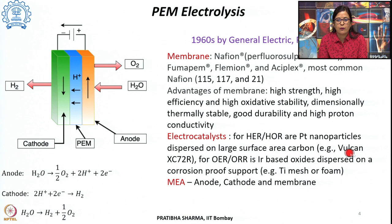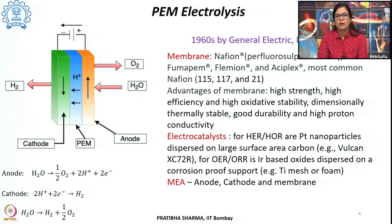The electrocatalysts for the hydrogen evolution reaction on the cathode side are platinum nanoparticles or platinum dispersed on large surface area carbon such as Vulcan XC72R. On the anode side for the oxygen evolution reaction, the electrocatalyst is IrO₂-based oxides dispersed onto a corrosion-proof support, generally titanium mesh or foam. Since the medium is acidic, more expensive materials — titanium-based or noble metals — are required.